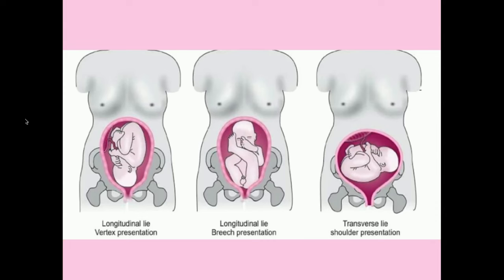Here's a picture. This is a vertex presentation with longitudinal lie — you can see that the fetal vertical axis is parallel to mom's. On the other hand, transverse lie means they're perpendicular. You can also have a longitudinal lie where the head is at the top and the butt at the bottom — this is breech. We'll talk about breech on the next slide.